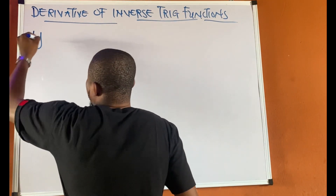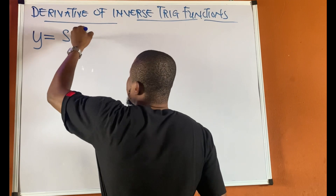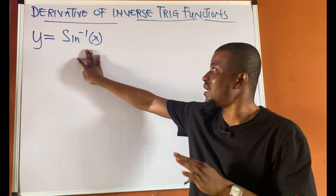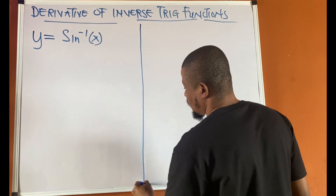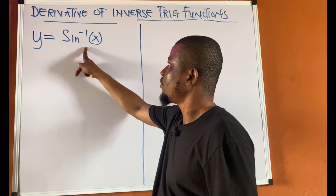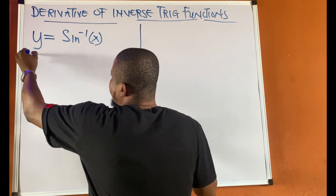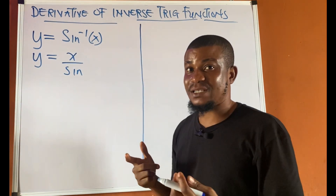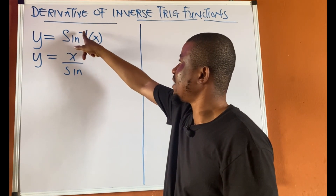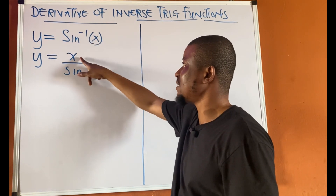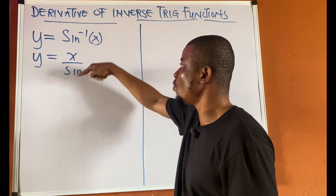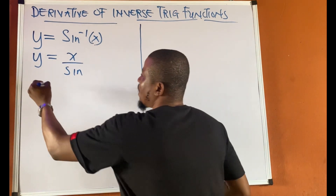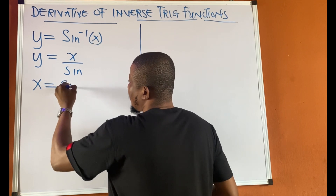If we have y equal to sine inverse of x, let's see how to differentiate this function. We can rewrite this as x over sine, because sine inverse is 1 upon sine times x. And if we cross-multiply this, we'll have x equal to sine y.